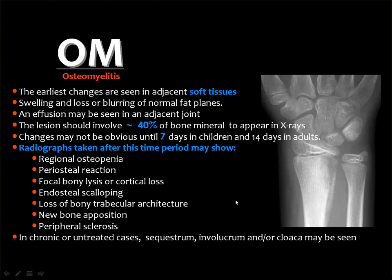The latent period between when the organism reaches the bone and the initial appearance of bone changes on X-ray is about seven days in children and about two weeks in adults. Changes that appear on plain X-ray include regional osteoporosis/osteopenia, periosteal reaction, and osteolytic lesion of the affected bone — usually in the cortex. The normal bone trabeculae are lost in the affected area, and after some time there may be new bone apposition and peripheral sclerosis.